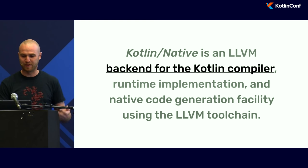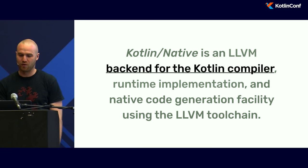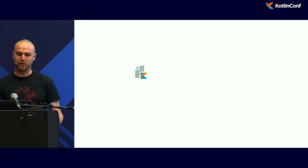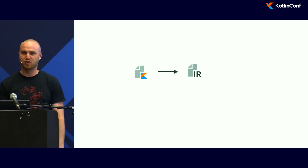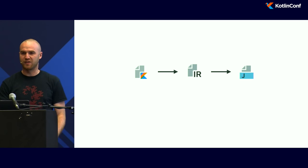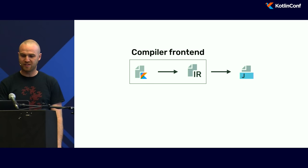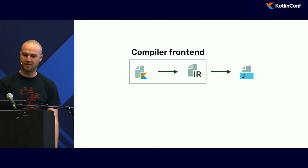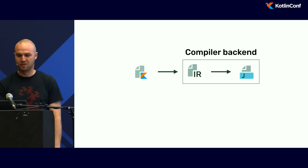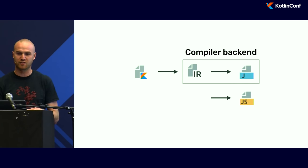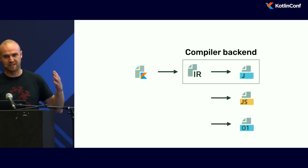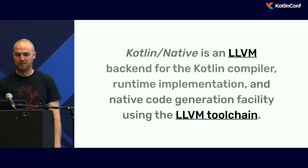That's a bit of a mouthful, so I'll explain a little bit. What does it mean to be a back-end for the Kotlin compiler? The way compilers work, you get a source code file like this Kotlin source code, then the compiler transforms it into another language with an intermediate representation. And then after this it transforms — from intermediate representation for Kotlin into Java bytecode. The first step is compiler front-end, the second step is back-end. That's the standard terminology for compilers.